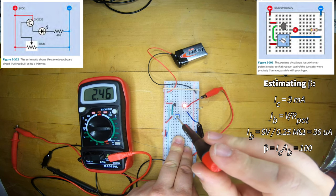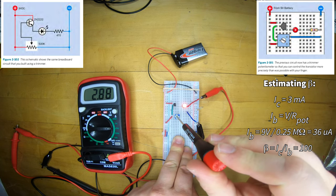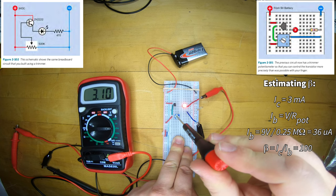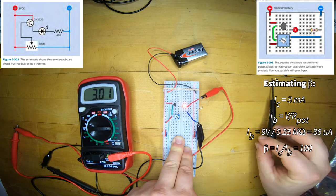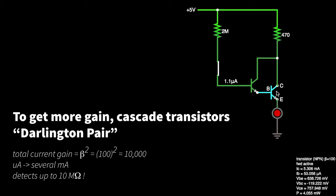Well, if you take 36 microamps and you multiply it by about 100, you get to approximately 3 milliamps, which is the current I measure on the collector.